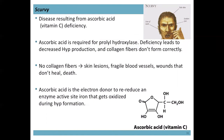Without sufficient hydroxyproline, collagen fibers don't form correctly, leading to skin lesions, fragile blood vessels, wounds that don't heal, and eventually death — this is scurvy. Magellan's voyage reportedly lost around 254 of 280 people, most from scurvy due to lack of fresh fruit. It was later discovered that eating citrus fruits provided enough ascorbic acid to make hydroxyproline. That's why the English became known as limeys from sending sailors with citrus fruits.